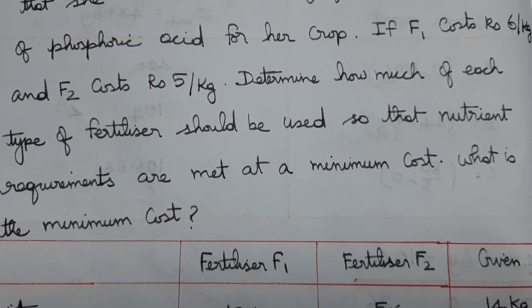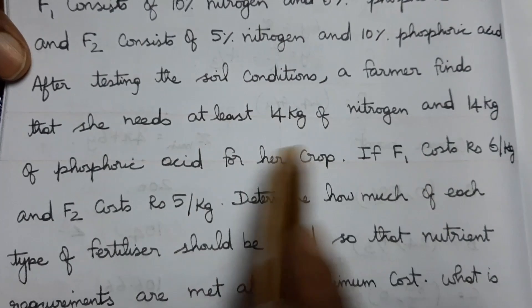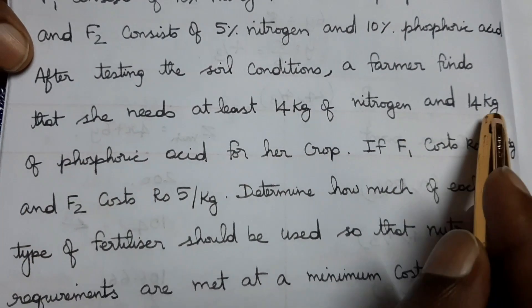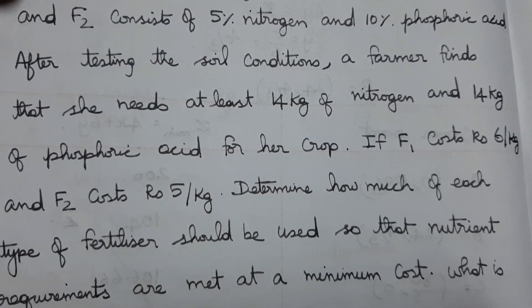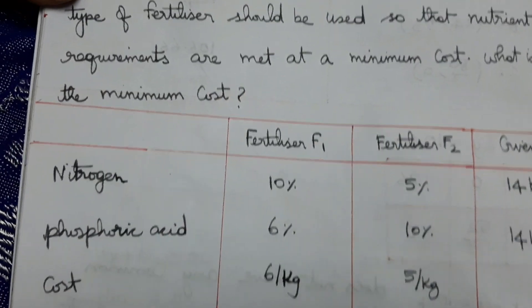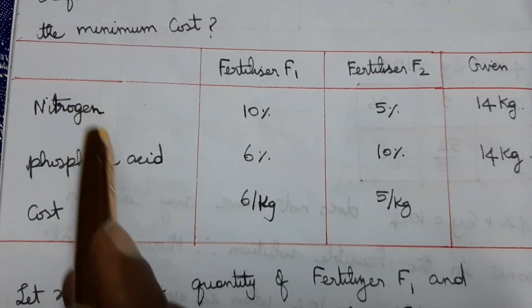At least 14 kg of nitrogen, at least 14 kg of phosphoric acid. At least means greater than or equal to. So we have fertilizer F1, fertilizer F2, nitrogen, and phosphoric acid.